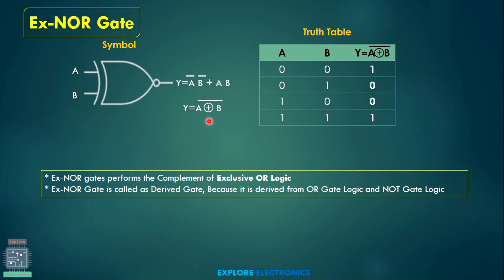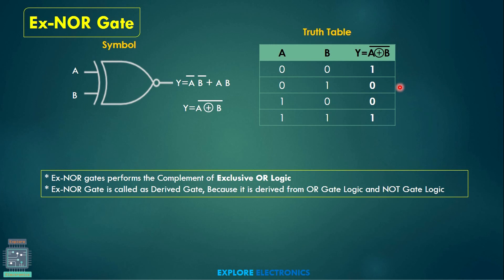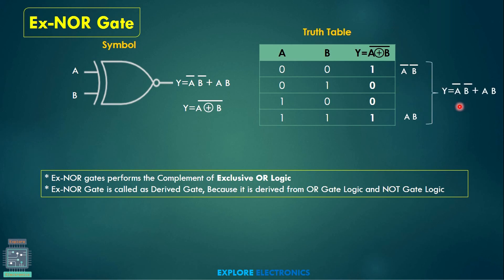Similarly, we have the XNOR gate, which is complementary to the XOR gate. At the XOR gate output there is a bubble indicating the XNOR gate. The truth table of the XNOR gate is exactly reversed to the XOR gate — when inputs are 0-0 and 1-1 the output goes high. We can represent this as the complement of the XOR expression: if A ⊕ B is XOR, putting a complement gives the XNOR gate. Looking at the truth table, when both inputs are 0-0 we write it as A-bar·B-bar, and when both are 1-1 we write it as A·B. Combining these: A-bar·B-bar + A·B is the expression for the XNOR gate.